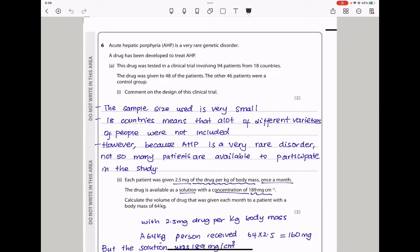Since this was carried out in 18 countries, that means that a lot of different varieties of people were not included. However, we were told that AHP is a very rare genetic disorder. So I can say that because AHP is a very rare disorder, not so many patients are available to participate in this study. That can validate why they use only 94 patients in this study.